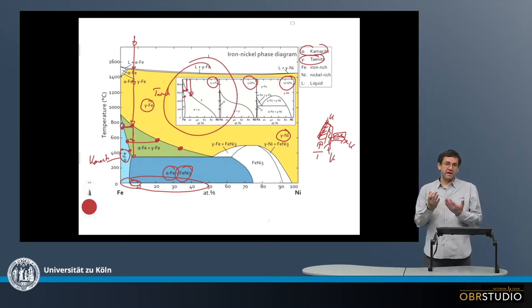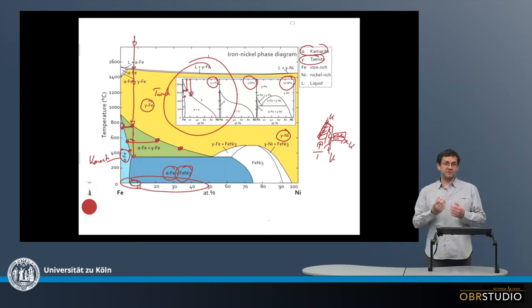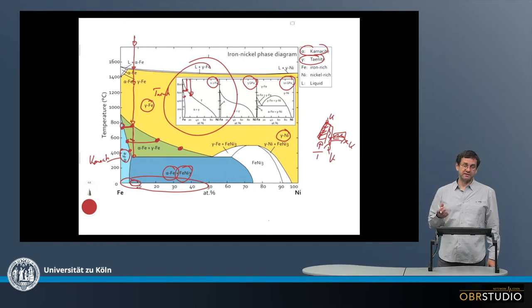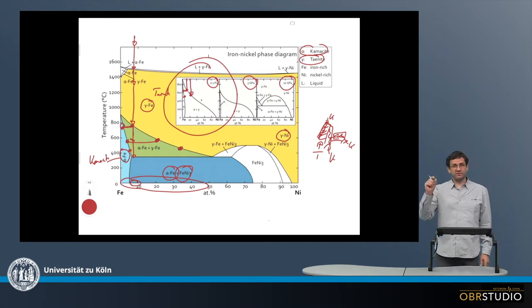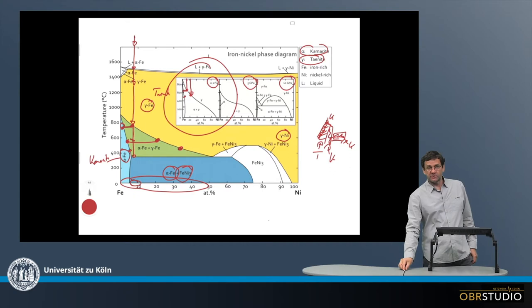This is often seen in iron meteorites when they are cut and then slightly etched with nitric acid, because these two phases have different resistances to the acid and how they're dissolved. These lamellae can be seen, and the width of these lamellae can be measured.